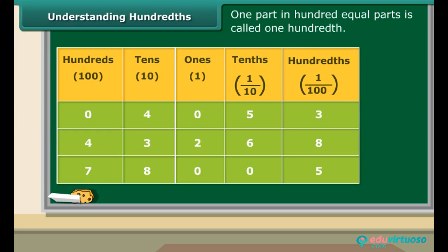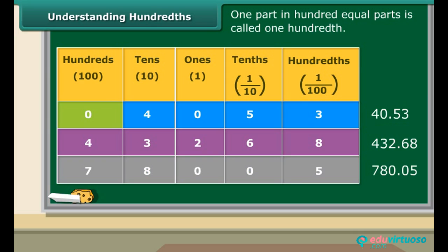Now concentrate on the table and let us read decimals from it. Look at the first row: 40 plus 5 tenths plus 3 hundredths will make 40.53. Now focus on the second row: 4 hundreds plus 3 tens plus 2 ones plus 6 tenths and 8 hundredths will make 432.68. Now pay attention to the third row: 7 hundreds plus 8 tens plus 5 hundredths will make 780.05.